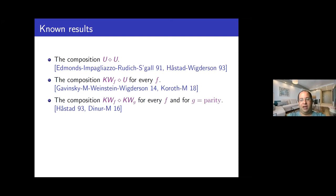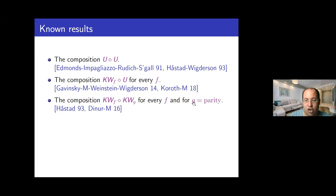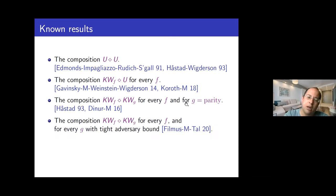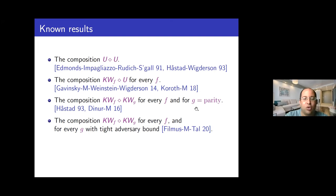Already in '93, in the celebrated work of Hastad on the shrinkage exponent, he showed that the KW conjecture holds in the special case where F can be any function and G is the parity function. In a work from 2016, we proved it in a different way using KW relations. In a very recent work together with Yuval Filmus and Avishai Tal, we generalized this result for every function G that has a tight adversary bound. This allows us to prove the conjecture not just for G equals parity, but also for a few more functions such as surjectivity — but still not many functions.